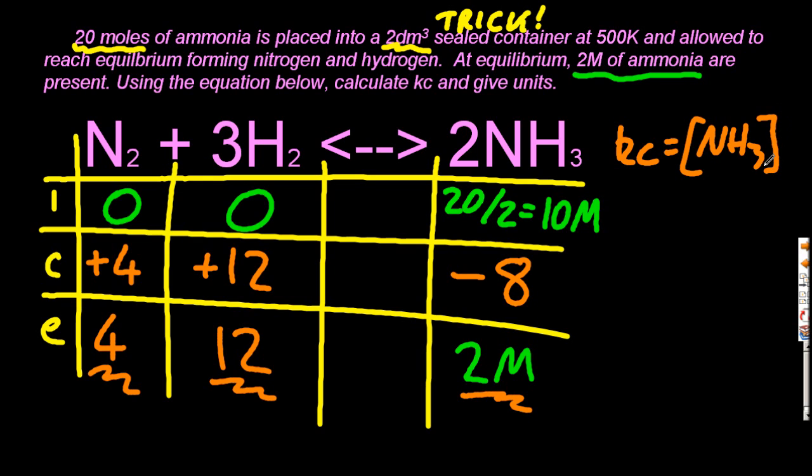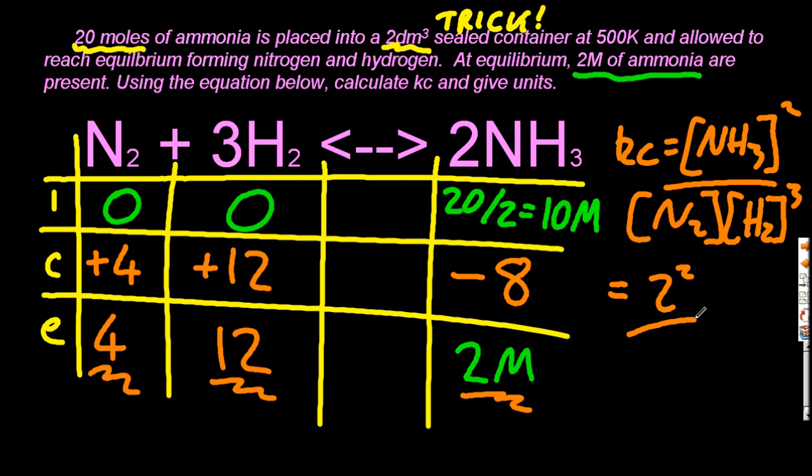The concentrations that I need are the equilibrium ones at the bottom. Kc is the products raised to their coefficients divided by the reactants raised to their coefficients. Using the equilibrium line at the bottom, I'll put the numbers in. That gives me 5.79 times 10 to the minus 4.